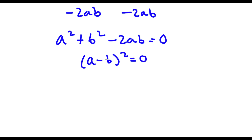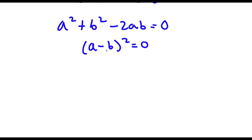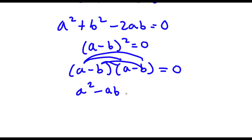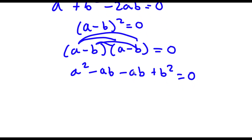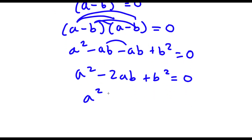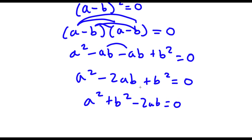And let's actually verify that this is true by expanding a minus b squared. So a minus b squared is the same thing as a minus b times a minus b. Distributing the a: a times a is a squared, and a times negative b is negative ab. Then distributing the negative b: negative b times a is negative ab, and negative b times negative b is positive b squared. So we have a squared minus ab minus ab plus b squared, which equals a squared minus 2ab plus b squared. And as you can see, these two expressions are equal.